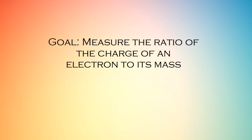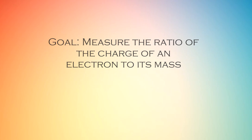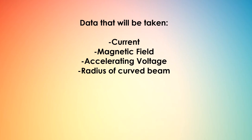We're going to do so by accelerating a stream of electrons through a measured potential difference. This stream is then projected into a uniform magnetic field with a velocity vector v, and there is a magnetic force perpendicular to both these vectors that causes the electron to follow a circular path. The data that will be taken are the current, the magnetic field, the accelerating voltage, and the radius of a curved beam that we will be measuring.